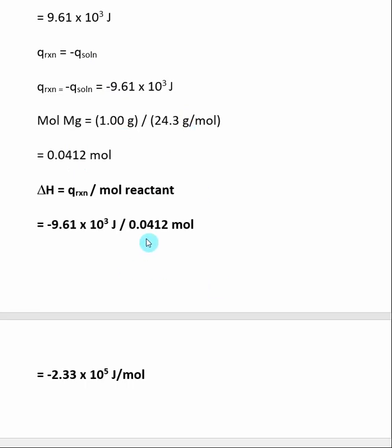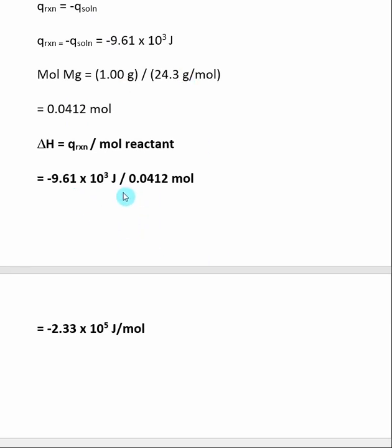Now all we simply need to do is divide these two numbers together. We take q reaction, divide by mole of reactant, and we get the enthalpy for the reaction. So here, once again, the sign on the enthalpy is negative, which means that this reaction is exothermic.